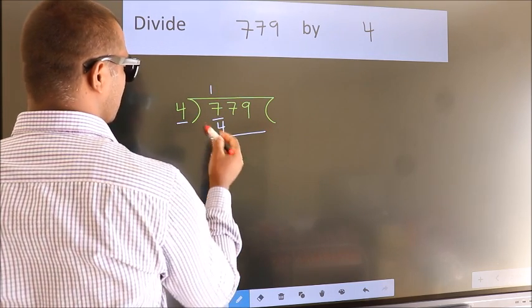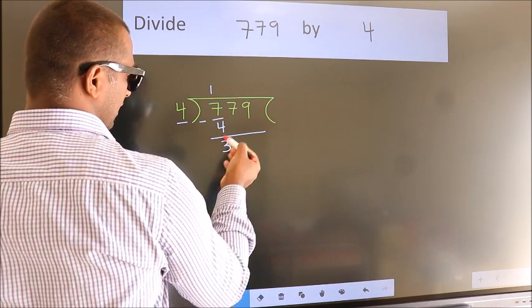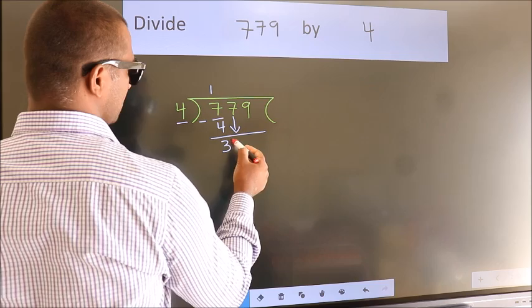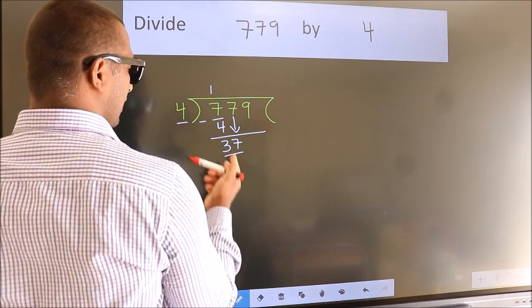Now we should subtract. We get 3. After this, bring down the beside number, so 7 down, so 37.